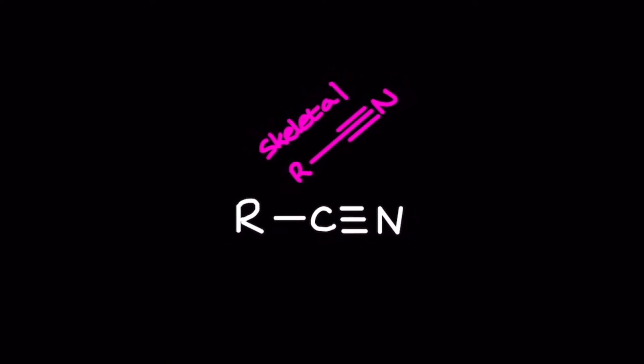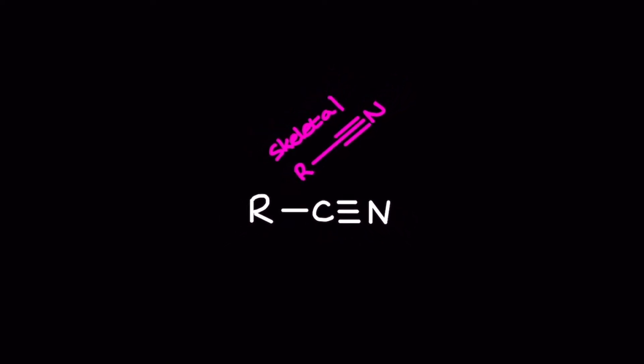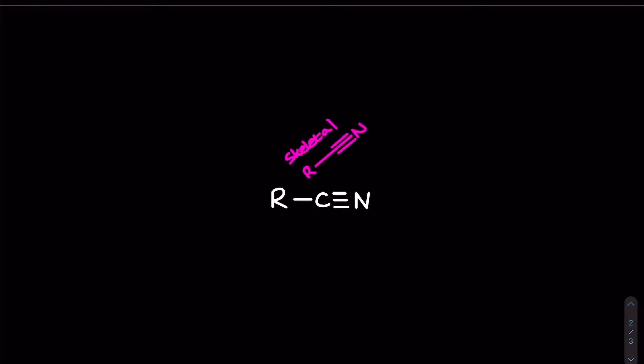The nitrile functional group in A-level chemistry is a carbon triple bonded to a nitrogen and single bonded to the rest of the chain. It's linear and its skeletal diagram looks horrific but that is the correct way to represent that linear bond.